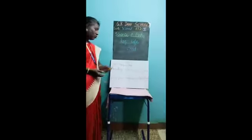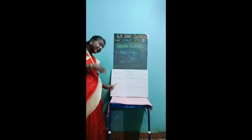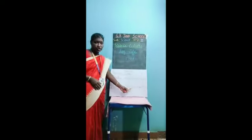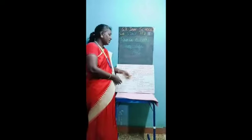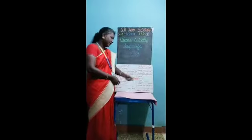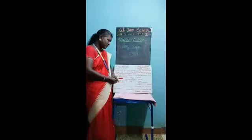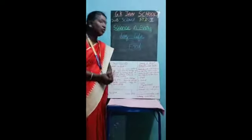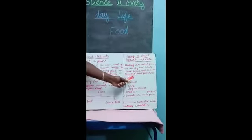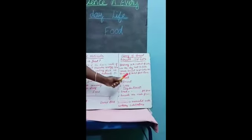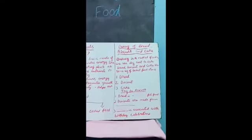Let us repeat once again — what are the cooking methods? Boiling, steaming, frying, deep frying, roasting, and grilling. Now, baking of bread, biscuits, and cakes — baking is also a process of cooking. We use dry heat to bake the items. In the bakery, they use dry heat to prepare food items like bread, biscuit, and cake. These are items done in bakeries.